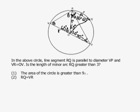Now they're asking us is the length of minor arc RQ greater than 3. Number 1 says that the area of the circle is greater than 9π. In other words, πr² is greater than 9π, which means that r² is greater than 9, and r is greater than 3.